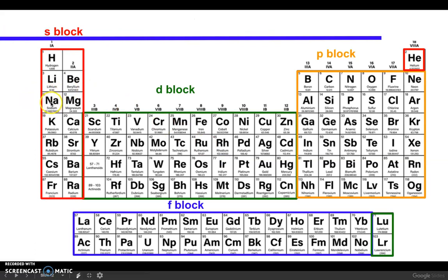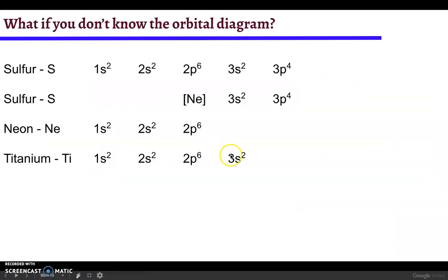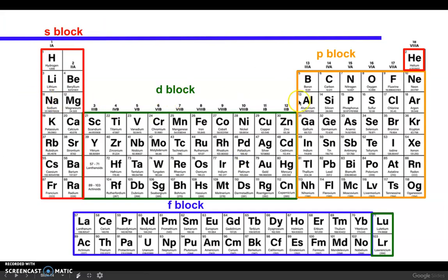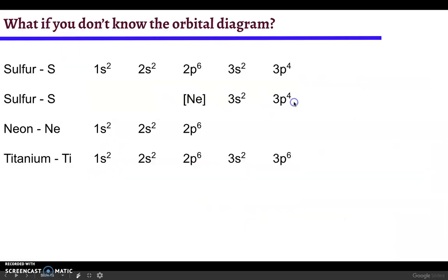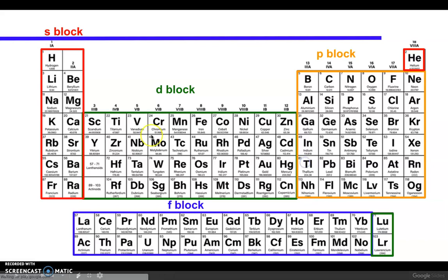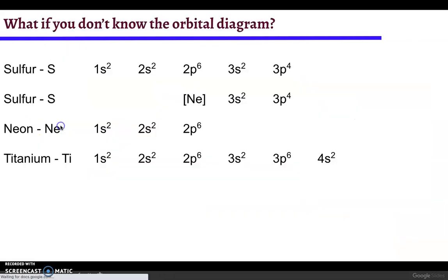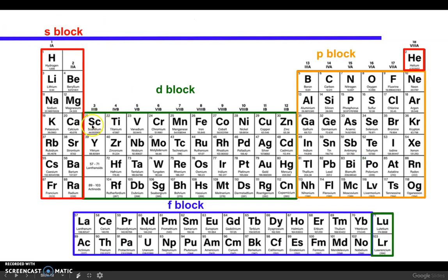Now we're going to go to row 3 in the s block, so this is going to be 3s2. Now we're in row 3 in the p block, so 3p6. Now we're in row 4 in the s block: 4s2.